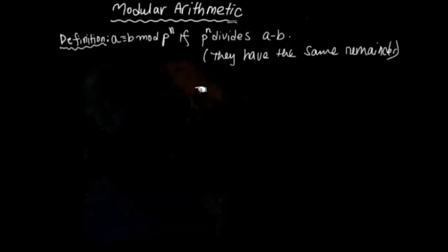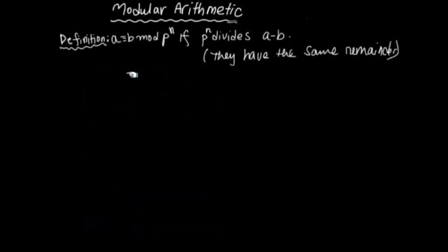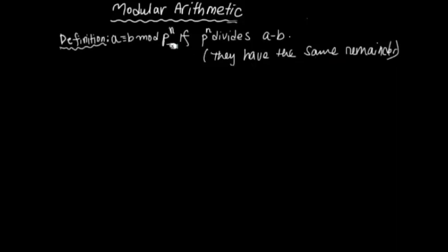Let us first go over the definition. a and b are integers. We say a is congruent to b modulo p^n if p^n divides a minus b. That's a concise way of defining this congruence notation — the triple-bar symbol looks just like an equal symbol and behaves a lot like one. Another way to interpret this is that a and b have the same remainder when divided by p^n.